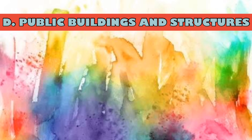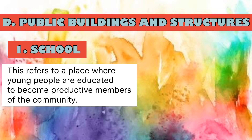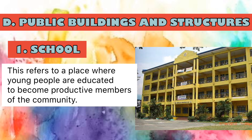Next, we have public buildings and structures. First is the school or skwelahan, a place where young people are educated to become productive members of the community. The most common style of skwelahan is American-influenced, featuring a concrete structure elevated on stilts, with windows and awnings that provide good ventilation. The classrooms in the building are linked together by a veranda located at both the front and rear parts of the building.